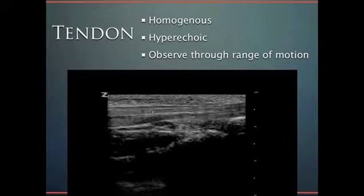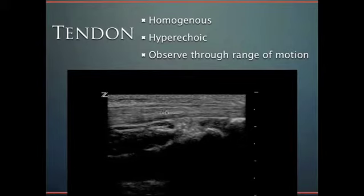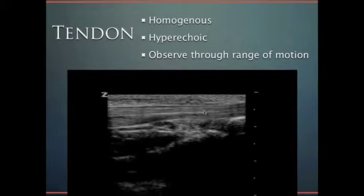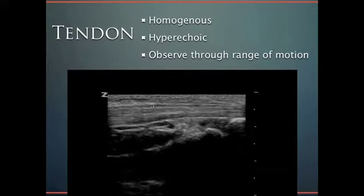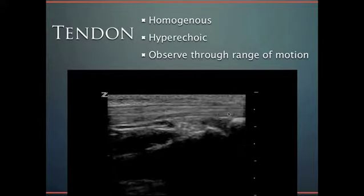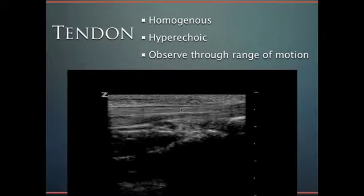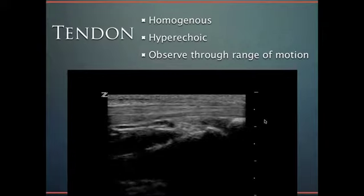Here's a tendon in its range of motion. As the joint is ranged, we can see this tendon — very homogeneous, very hyperechoic — as it moves along its tissue plane.